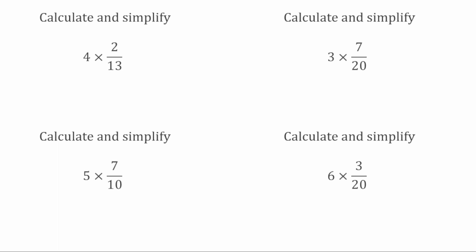For this first question, we've got 4 multiplied by 2 over 13. Just like before, we're going to change our whole number into 4 over 1, which we're then multiplying by 2 over 13. We can't cross-cancel any of our numbers here because we don't have a highest common factor greater than 1. So we're going to multiply them through: 4 times 2 gives us 8, and 1 times 13 gives us 13. So our answer to this one would be 8 over 13.